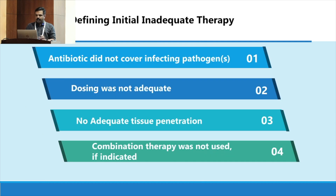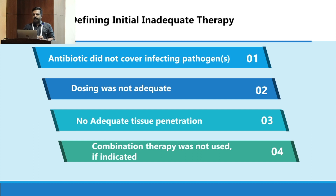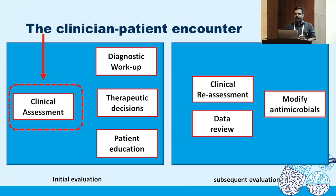Initial inadequate therapy may be a cause of death in the majority of sepsis patients. Inadequate therapy is defined as an antibiotic that is not covering the infecting pathogen, dosing that is not adequate, an antibiotic without proper tissue penetration or concentration at the site of infection, or failure to use combination therapy when it is indicated.